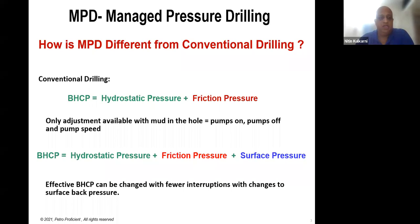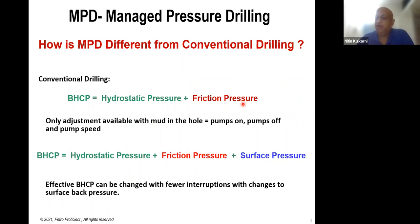In conventional drilling, bottom hole pressure is a combination of hydrostatic pressure and friction pressure. To change bottom hole pressure, you can either change the hydrostatic pressure or the friction pressure. This is all subject to hydraulics — if you are already working you would know this, but if not, we do cover it in detail in our course.